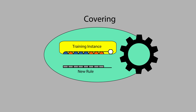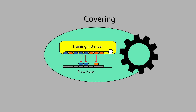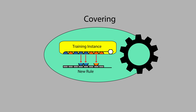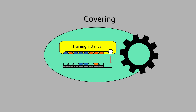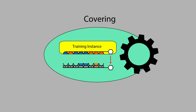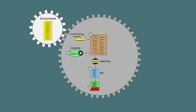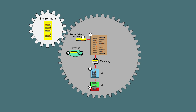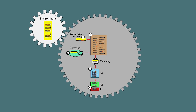Covering works by generating a rule condition which randomly specifies a subset of attribute values in the current training instance, and applies wildcards to the rest. The action, or predicted class for the rule, is set to the class of the current training instance. Now, let's assume that we have a correct set with at least one rule in it, and an incorrect set that may have some rules as well.